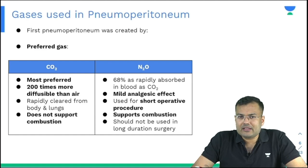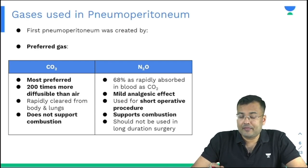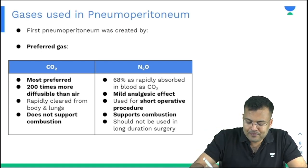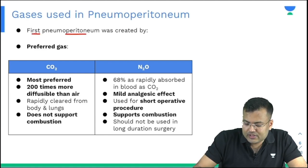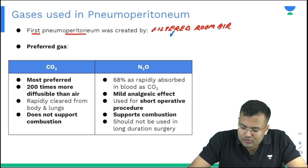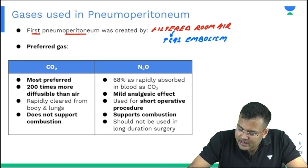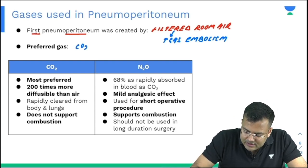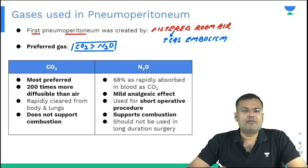The first pneumoperitoneum was created by filtered room air. The big problem with filtered room air is that it increases the risk of gas embolism. The gases used for creating pneumoperitoneum are: most preferred is carbon dioxide, followed by nitrous oxide.